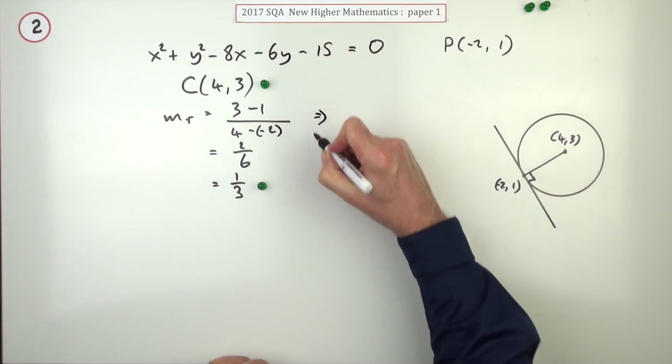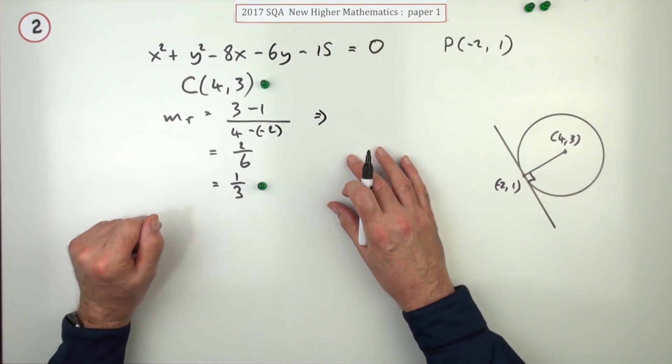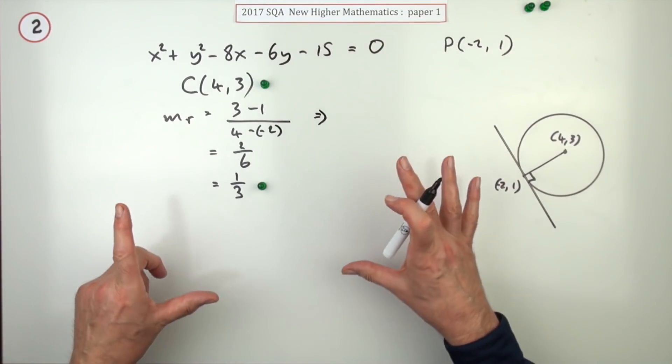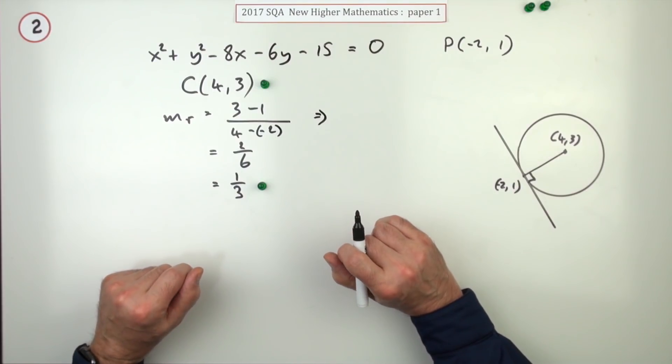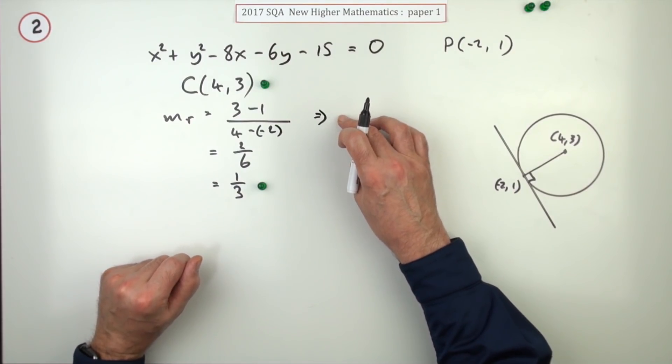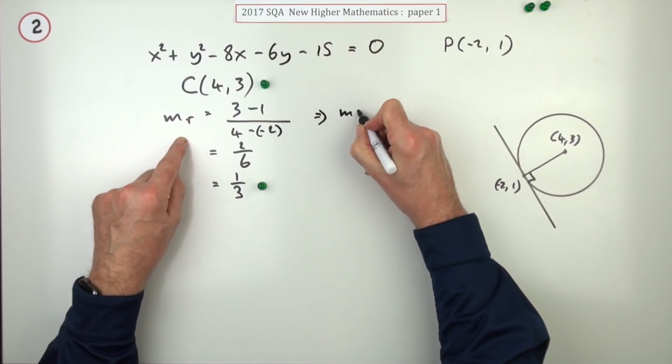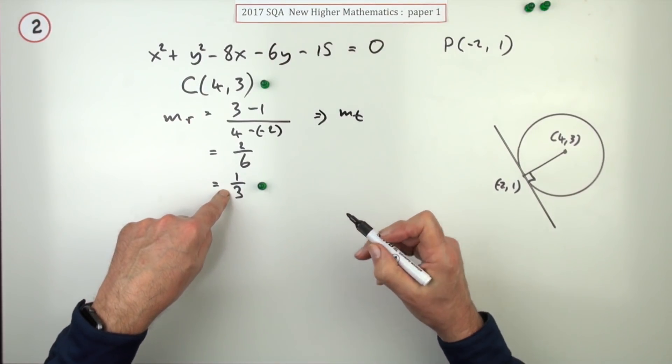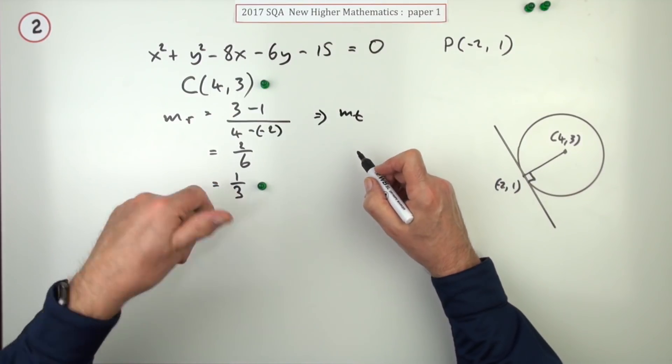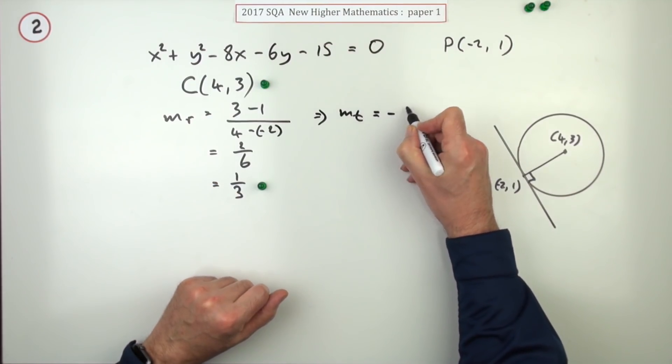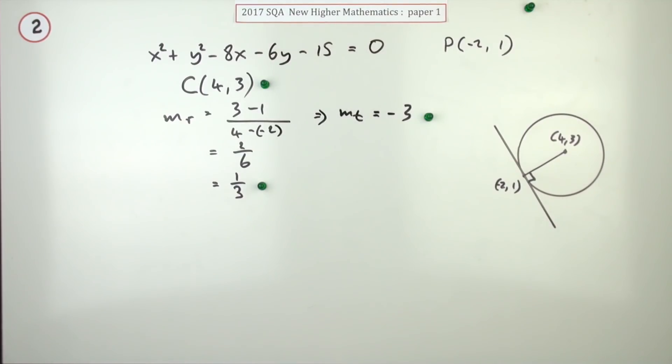Now from that, and without having to state that the product of the gradients is negative 1, you would do that in a question where you're required to prove the lines were perpendicular, you can simply state straight away that the gradient of the tangent must be whatever it takes to multiply to give negative 1. So it'll be negative 3. That gets you a mark.